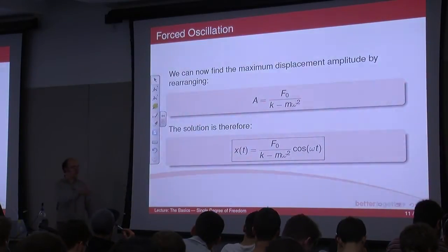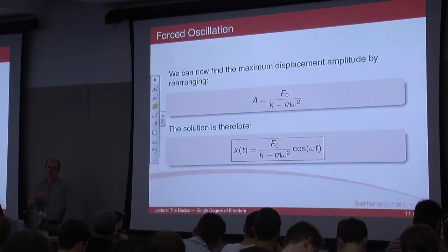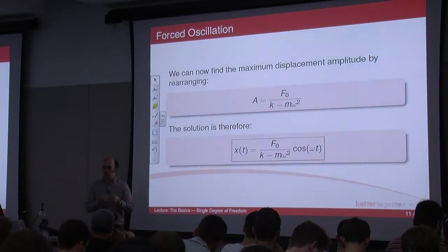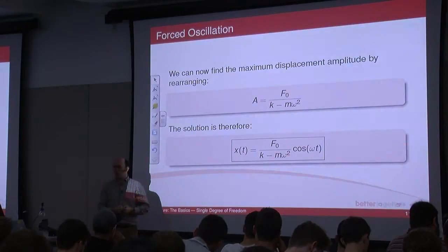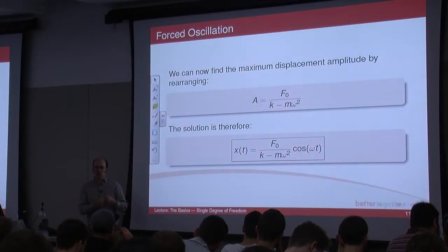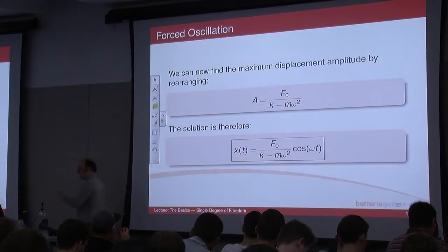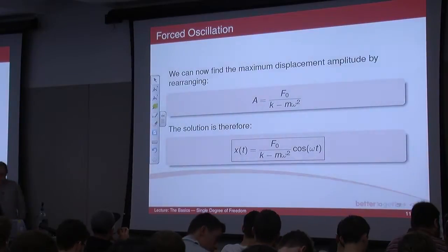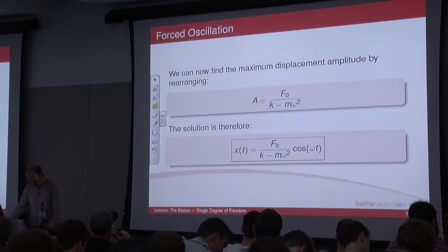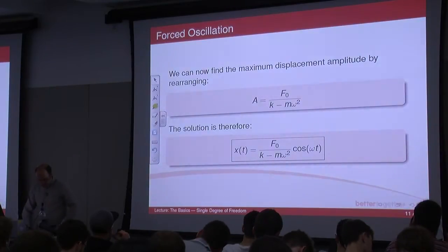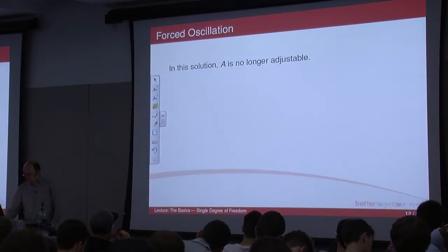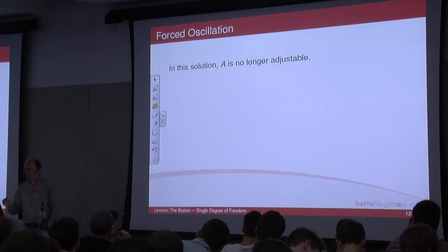If you drive a system at 5 radians per second, it doesn't matter that it wants to oscillate at 10 radians per second. We'll talk about transients in the next chapter, but eventually it's going to oscillate at the frequency you're giving it. It might fight it to start with, which is why you get all sorts of behaviour at the beginning, but that transient will die away and it will oscillate at 5 radians per second. So that's the basic case of forced oscillation: single degree of freedom with no damping. A is no longer adjustable — it depends entirely upon the sinusoidal force being applied.